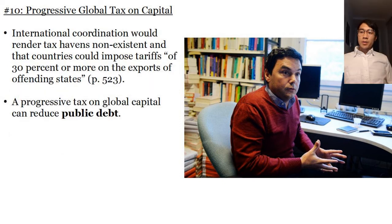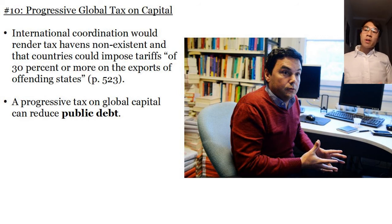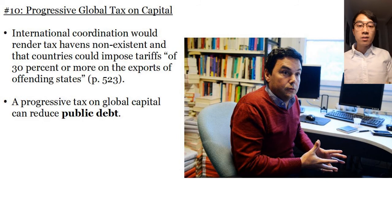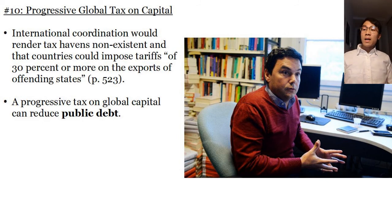This would require international coordination and could potentially render tax havens non-existent, such as in the Cayman Islands, the Bahamas, etc. Countries could impose tariffs of about 30% or more on the exports of offending states — that is, states that participate in helping their citizens put assets into tax havens. Lastly, he says that a progressive tax on global capital can also help to reduce public debt.